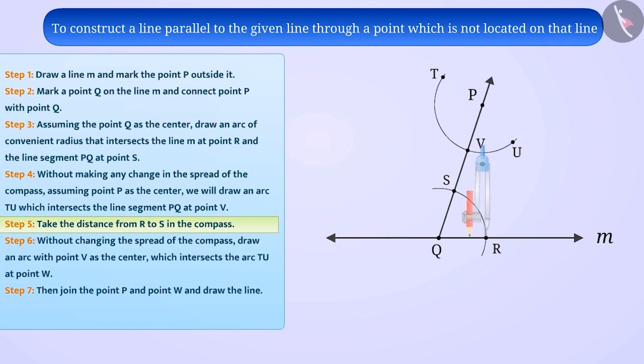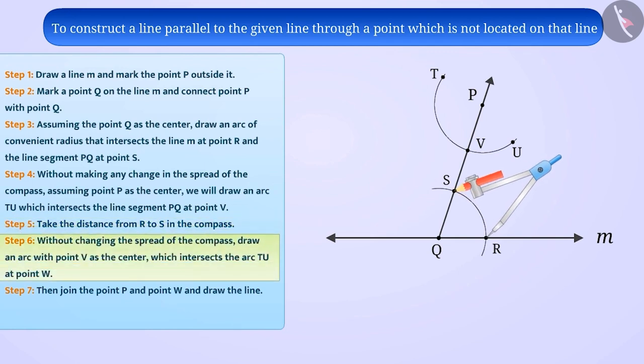Step 5: Place the pointed tip of the compass at R and adjust the opening so that the pencil tip is at S. Step 6: With the same opening as in step 5 and with V as center, draw an arc cutting the arc TU at W.